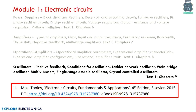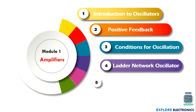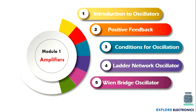Hi everyone, welcome to this video. In this video let us understand oscillators. In the previous video we have seen power supplies, amplifiers, and operational amplifiers. Now let us understand what is an oscillator, positive feedback involved in oscillator circuits, condition for oscillation, and the two types of oscillators: the ladder network oscillator and the Wien bridge oscillator.